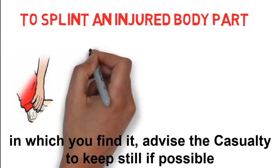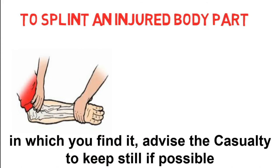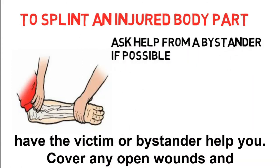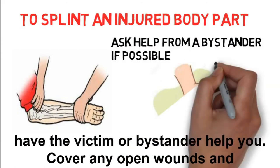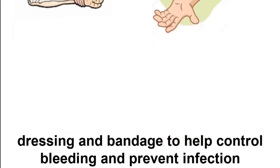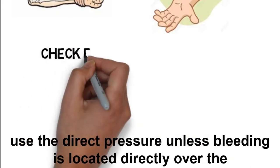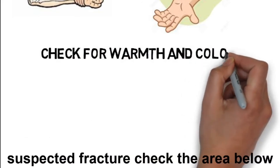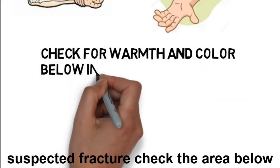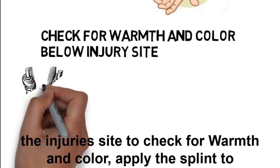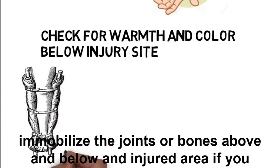To splint an injured body part, support the injured part in the position in which you find it. Advise the casualty to keep still. If possible, have the victim or a bystander help you. Cover any open wounds with a dressing and bandage to help control bleeding and prevent infection. Use direct pressure unless the bleeding is located directly over the suspected fracture. Check the area below the injury site for warmth and color.